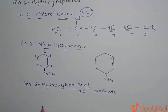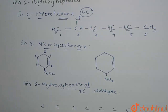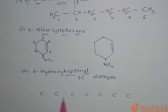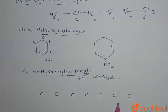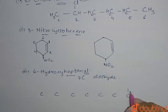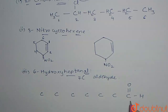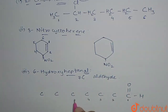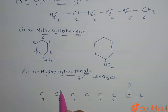So we will write here: 1, 2, 3, 4, 5, 6, 7 — this is the 7-carbon chain. When we have an aldehyde group, we always take it as carbon 1. So the aldehyde group is attached at carbon 1 position. CHO is the aldehyde group.